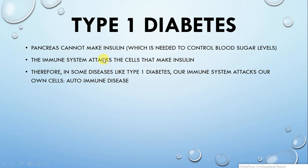The last topic is type 1 diabetes. If you're not familiar with it, it's basically when the pancreas cannot generate insulin, which is needed to control blood sugar levels. The reason it can't is because our own immune system attacks the cells that make insulin. The details aren't required, but you need to know that some diseases like this — where our own immune system attacks our own cells — are called autoimmune diseases.